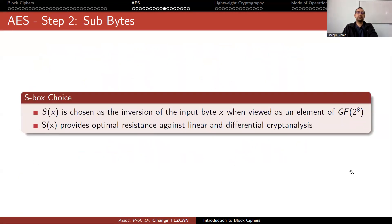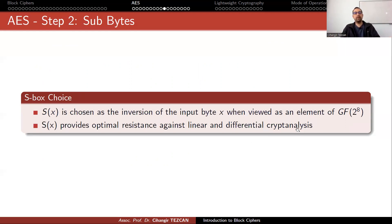The AES S-Box is defined as the inversion of the input byte X when viewed as an element of Galois field GF(2^8). This S-Box provides optimal resistance against both linear and differential cryptanalysis. It is an open question whether you can find a better 8×8 S-Box with even stronger security against differential or linear cryptanalysis.